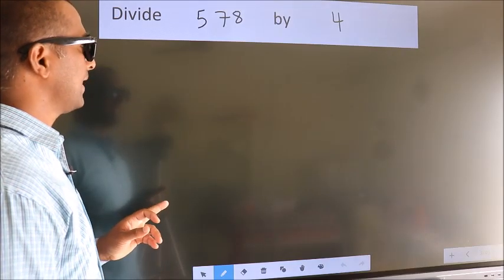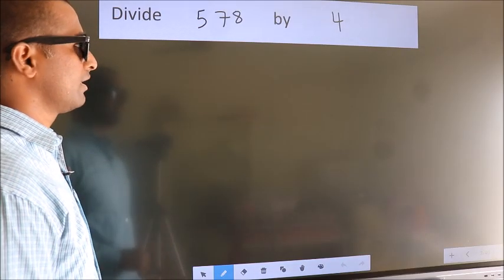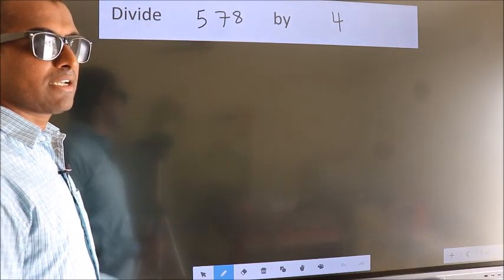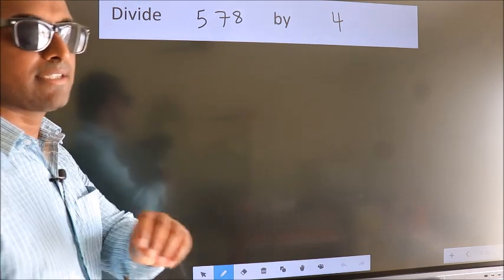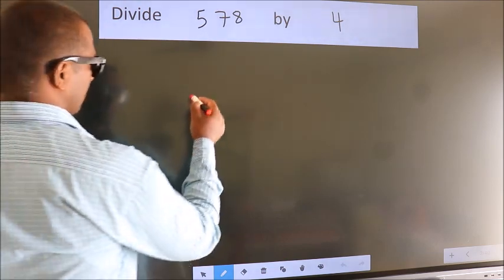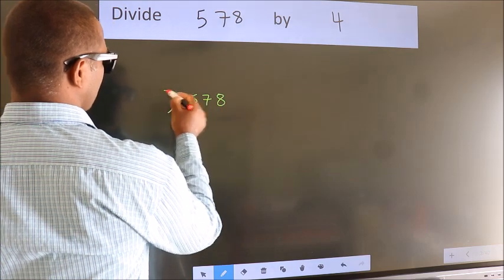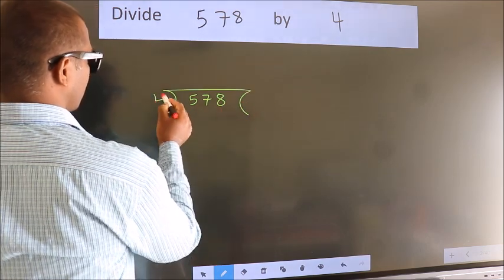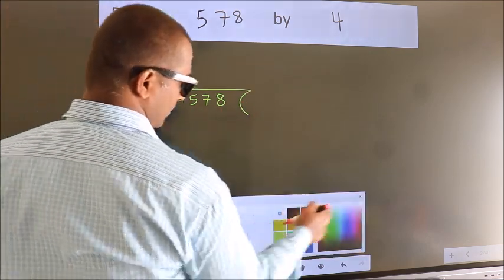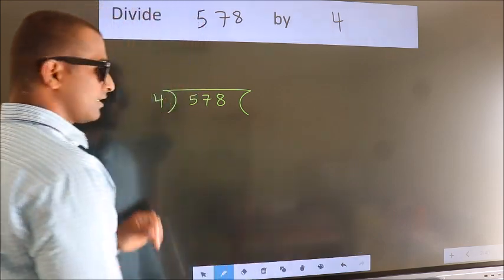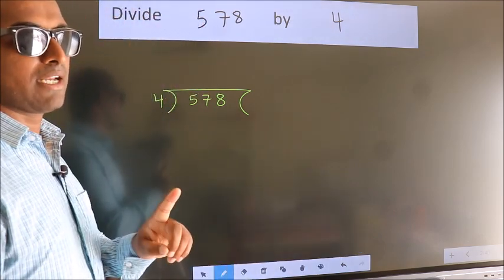Divide 578 by 4. To do this division, we should frame it in this way. 578 here, 4 here.